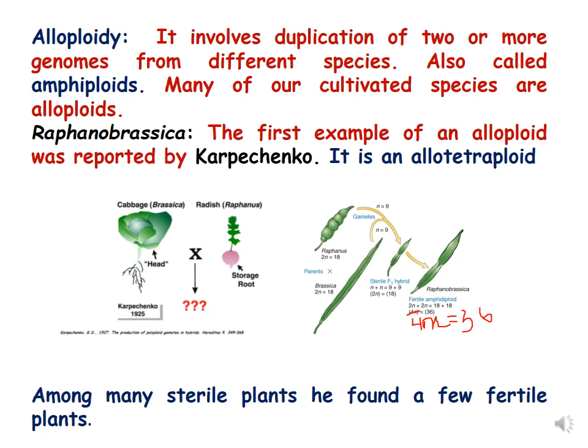Many of our cultivated species are alloploids. We have already discussed that wheat belongs to hexaploid. Wheat is a hexaploid species and this evolved as a result of polyploidy. Raphanobrassica is the first example of an alloploid, which was reported by Karpechenko, and it is an allotetraploid.